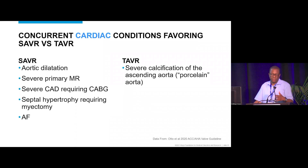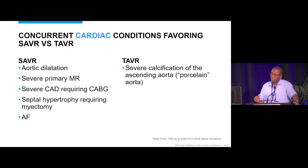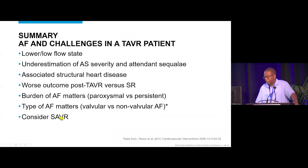Associated structural heart diseases in AFib — mitral regurgitation, tricuspid valve regurgitation — can all be addressed surgically. However, these patients are elderly with comorbidities, and most prefer minimally invasive approaches over open surgery, which creates a real tension with guideline recommendations.